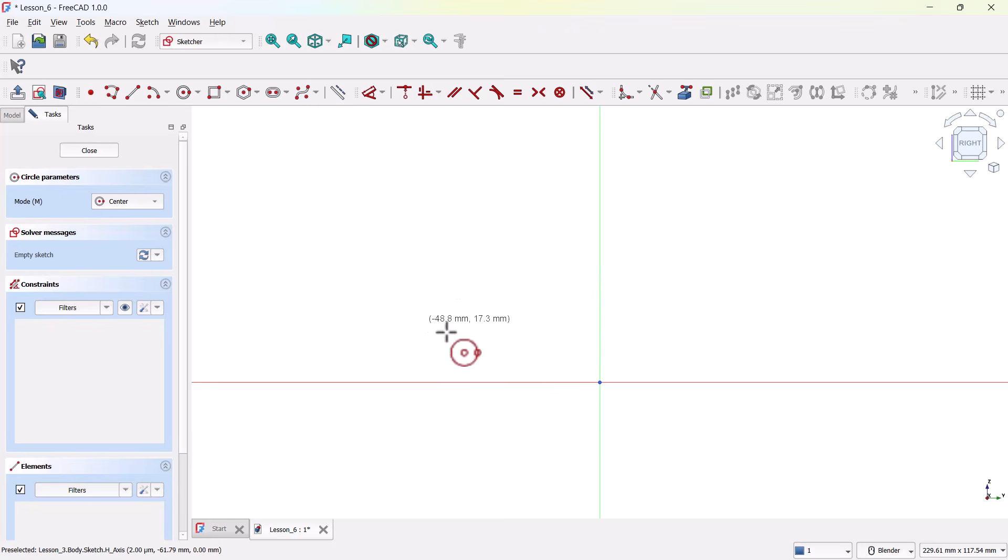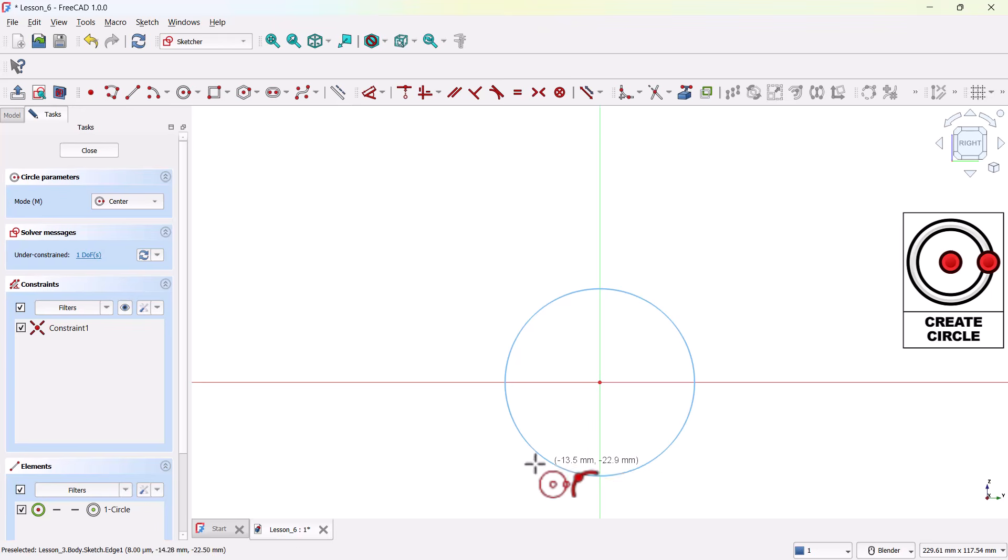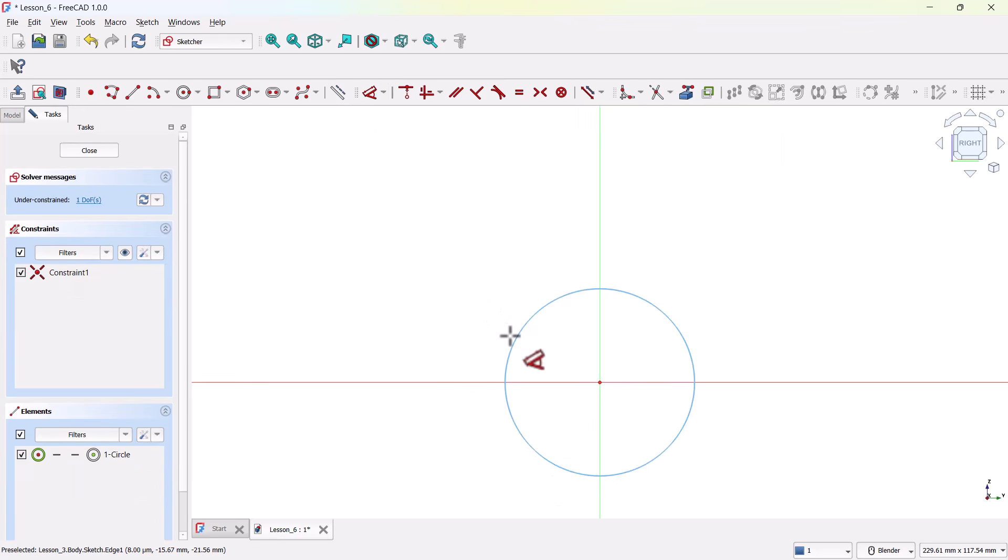Now grab the Circle tool, click the origin for the center, drag out the circle, and don't worry about size yet. Now let's constrain it. Grab the Dimension tool, click the circle, and set the diameter to 50 millimeters.